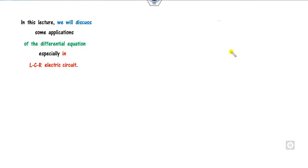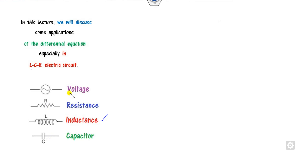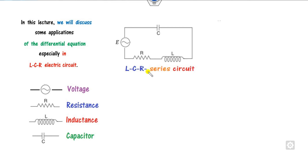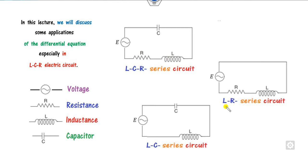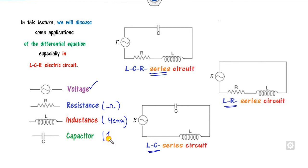In this lecture, we will explain the application of the differential equation especially in the LCR circuit. L is called inductance, C is capacitance, R is resistance, and E is the voltage. They are connected in series form. The unit of resistance is ohm, inductance is in Henry, capacitance is in Farad, and voltage is in volts.